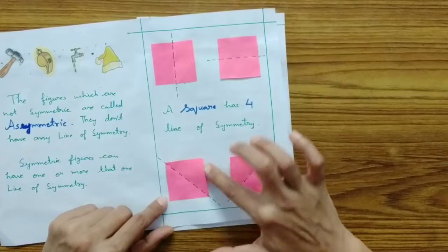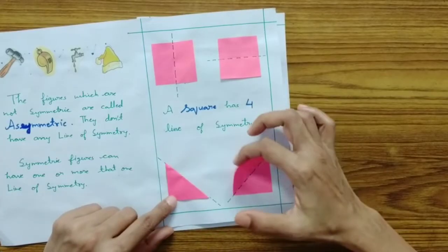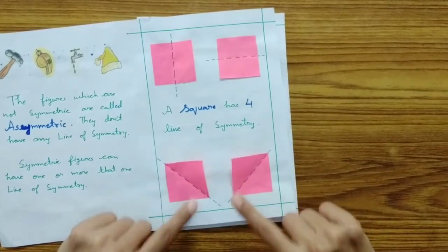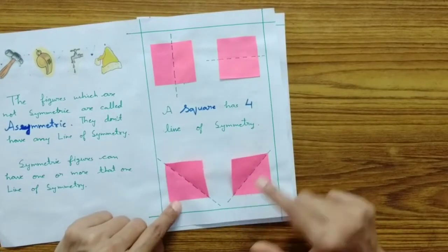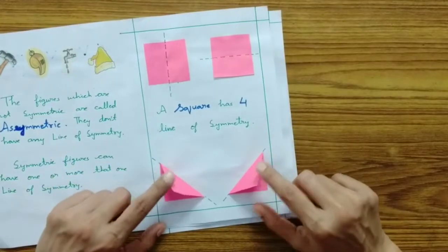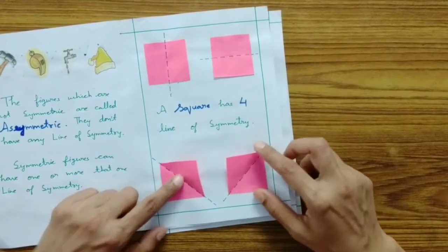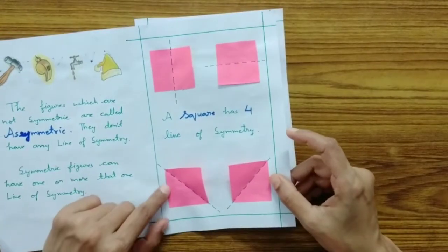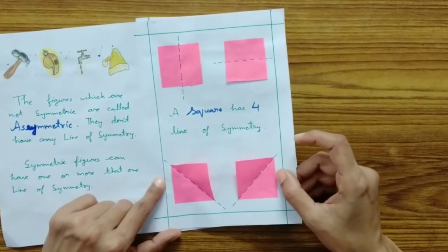Similarly, the lines along the diagonals are also lines of symmetry because the square can be folded to overlap both halves along these diagonal lines as well. So a square in total has four lines of symmetry.